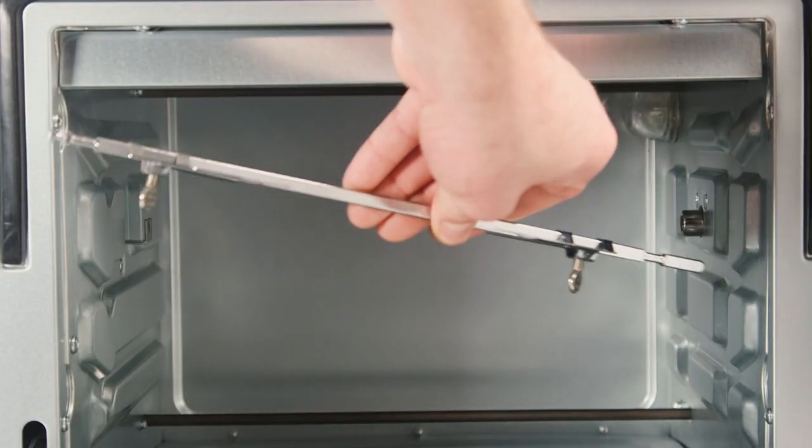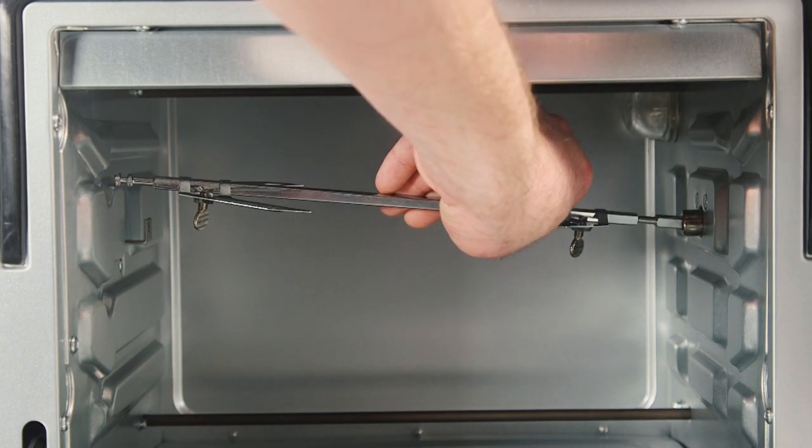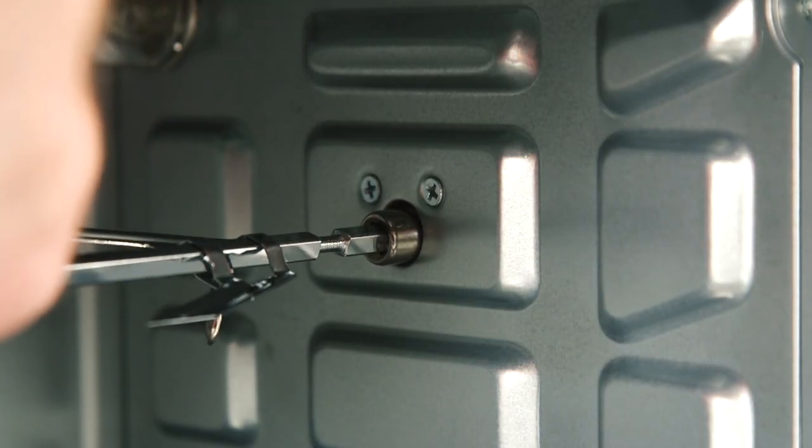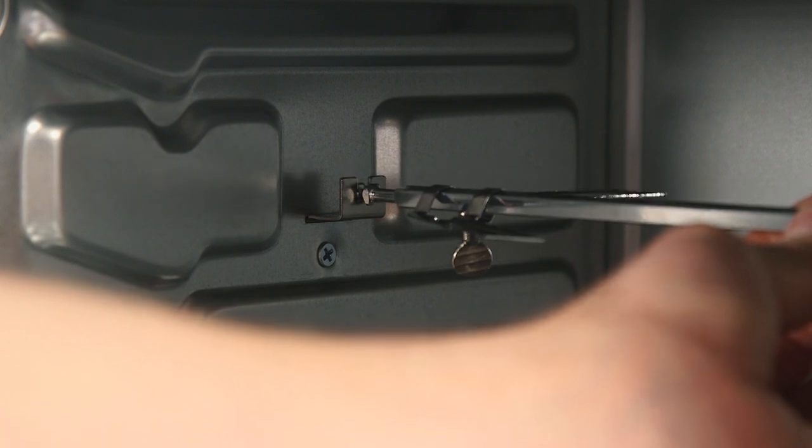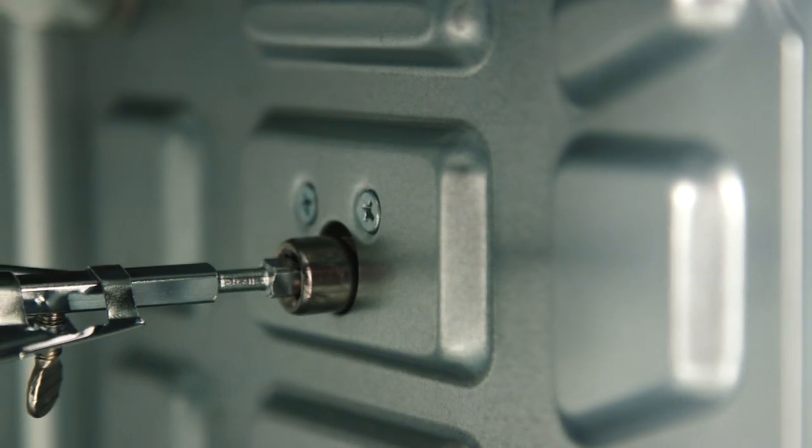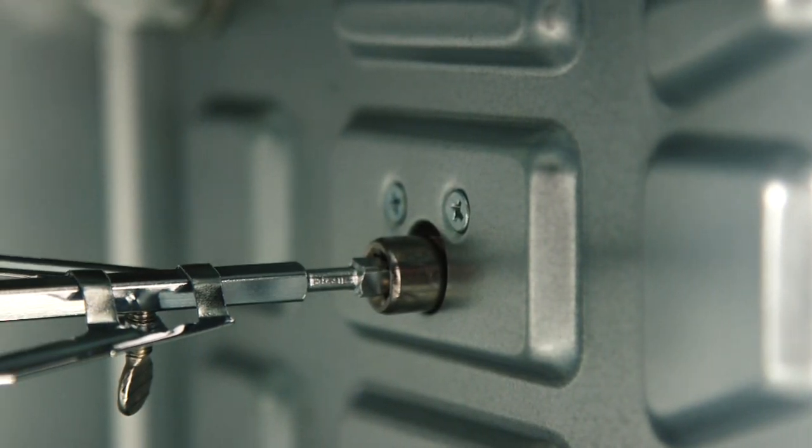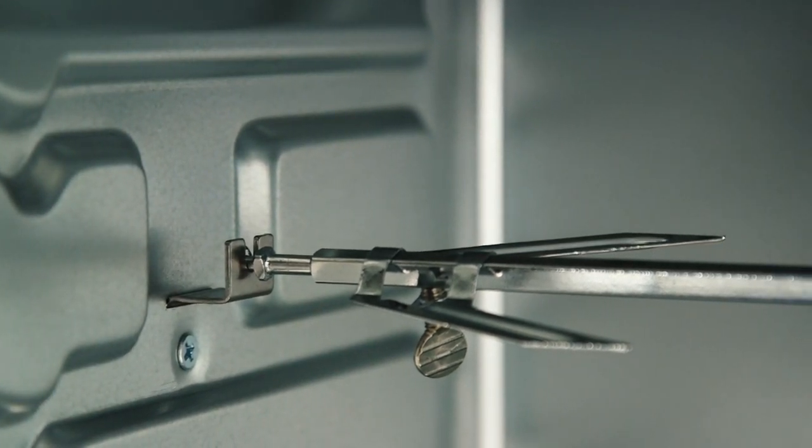Next, slot the rotisserie spit into the socket on the right of the oven. Then, slot the other side onto the bracket on the left. Please note that each side of the rotisserie spit is different, so ensure that you have fitted the spit as shown.